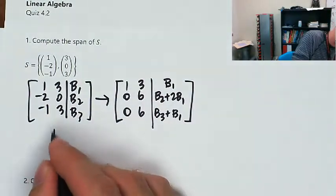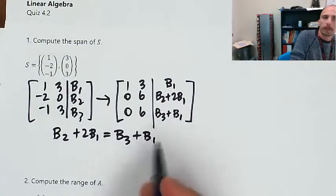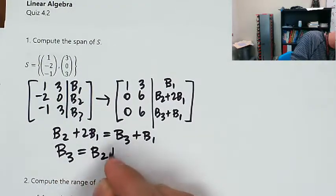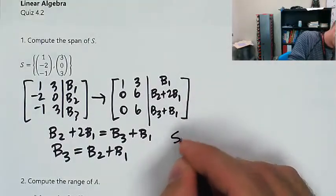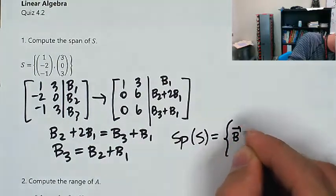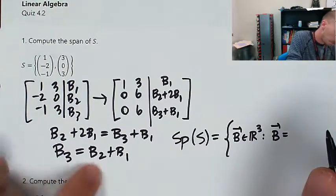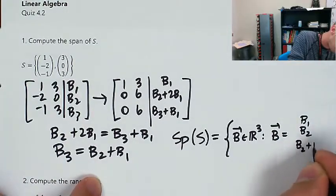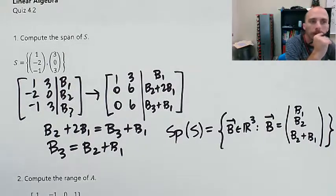So now I've got b2 plus 2b1 equals b3 plus b1, so b3 is equal to b2 plus b1. The span of S is equal to the set of all three-dimensional vectors b in R3 such that b3 equals the sum of the first two. b1 can be whatever it wants, b2 can be whatever it wants, and b3 equals b1 plus b2.